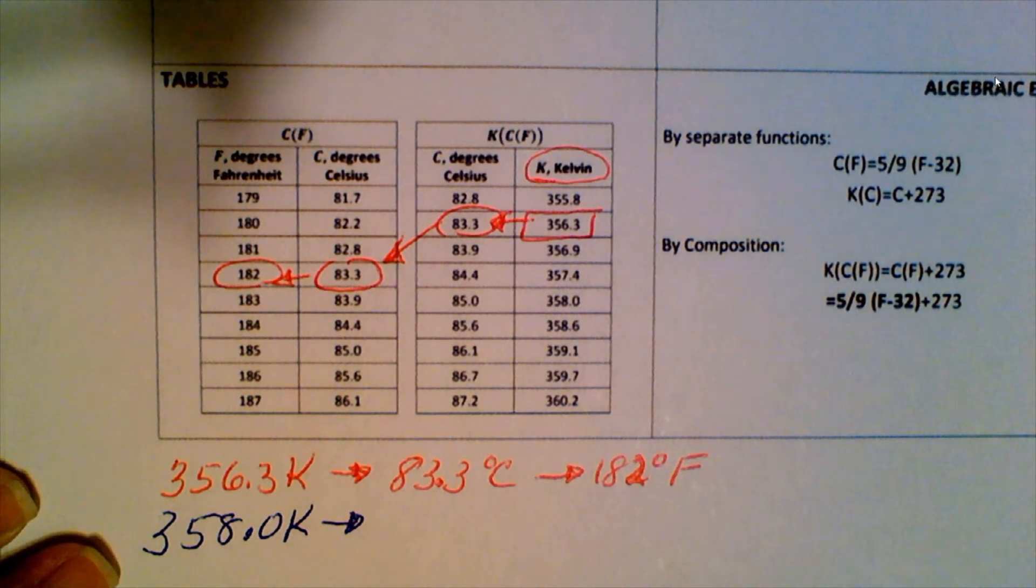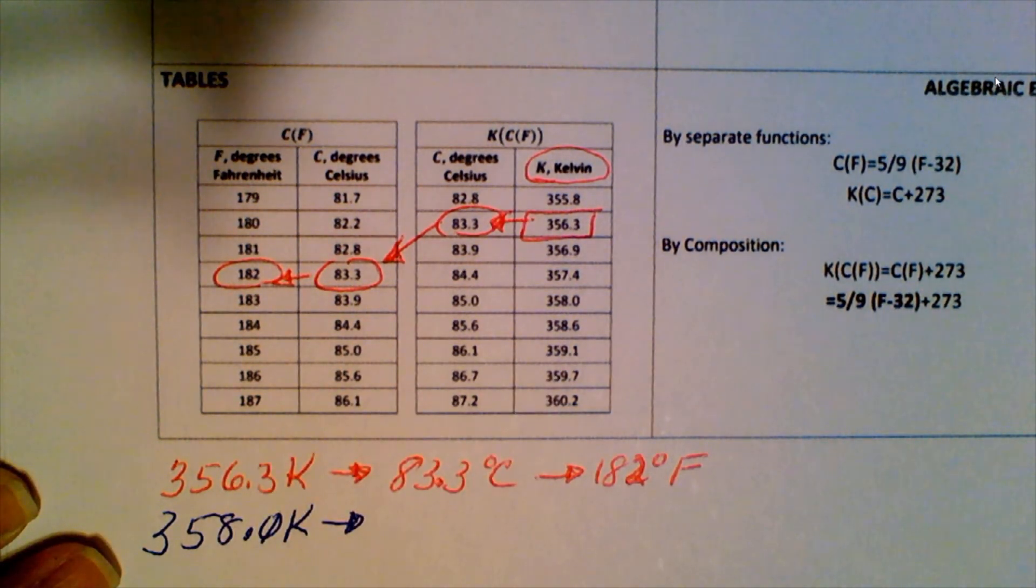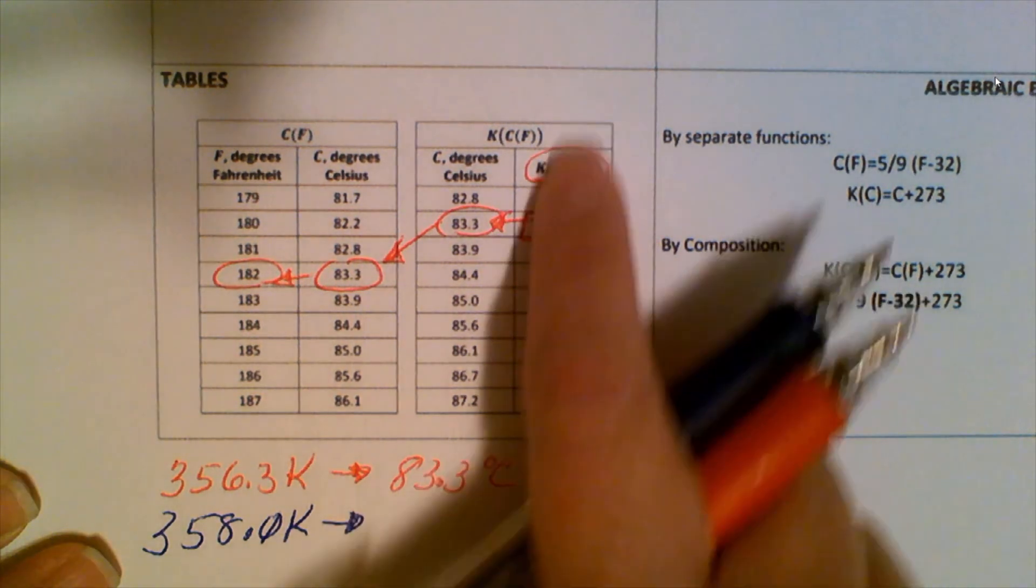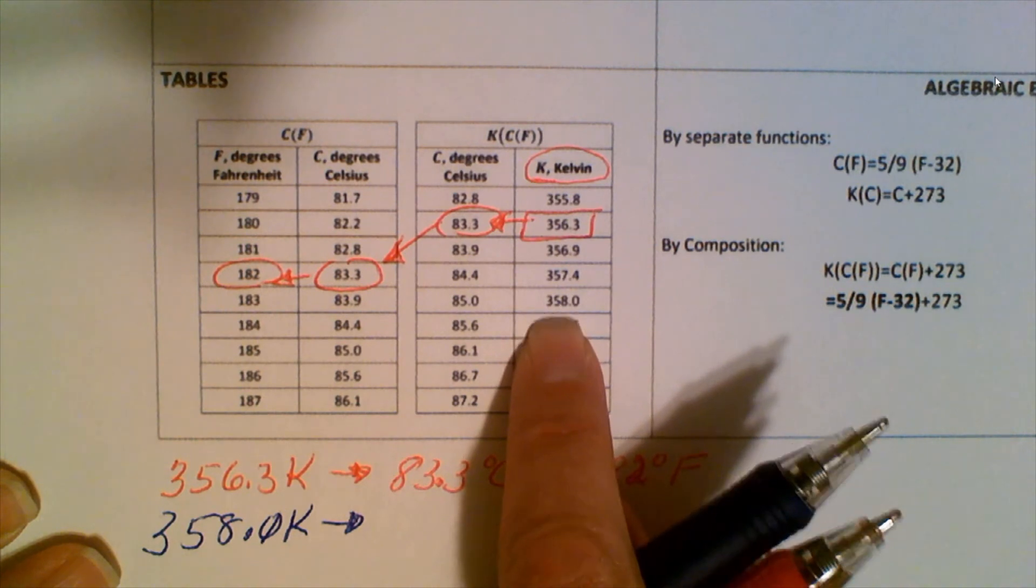We also have 358.0 Kelvin. We go to find 358 in the table. I go through and read the values. There's the 358.